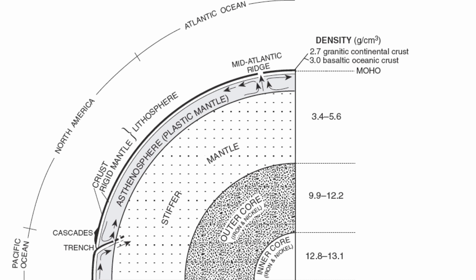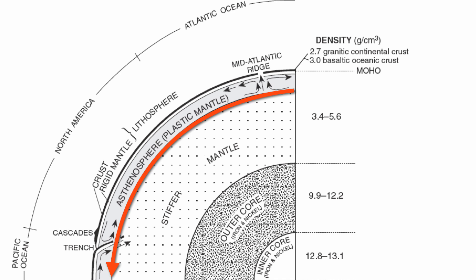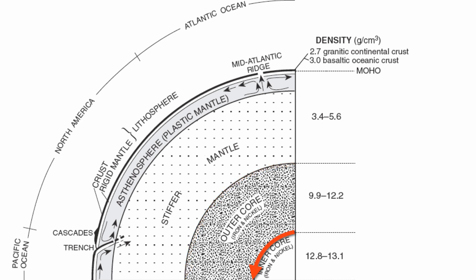Each layer has its own individual pattern, representing where one layer ends and the other begins. The very outer portion of our Earth is the lithosphere. Where the lithosphere ends, the asthenosphere begins. As we travel deeper, where the asthenosphere ends, the stiffer mantle begins. The stiffer mantle ends, the outer core begins. Where the outer core ends, the inner core begins, and we can go as deep as the actual center of our planet.